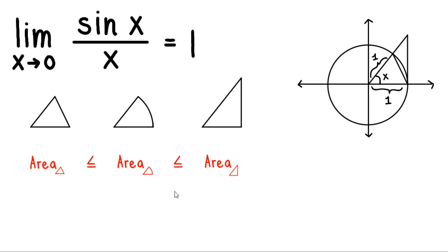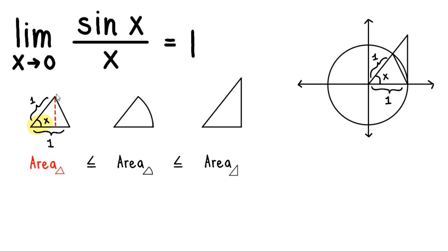Given this, let's determine the areas of each region. For the first triangle, to find its area we need its base and height, since the area of a triangle is one-half times base times height. We already have the base, but we don't have the height. To obtain the height, we'll use the angle x — take note that by this angle, the height is simply equal to sin x.